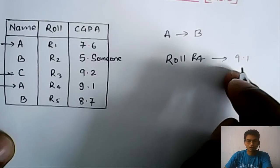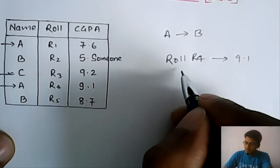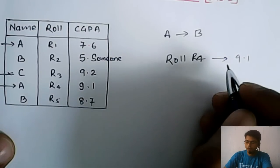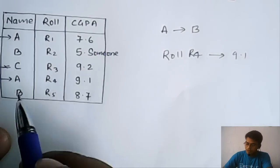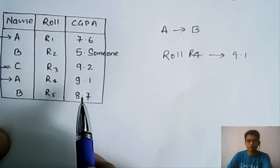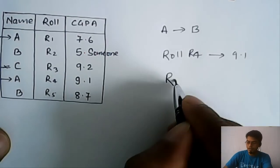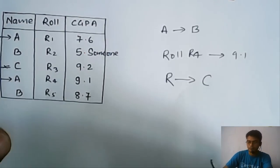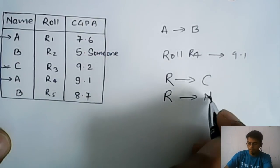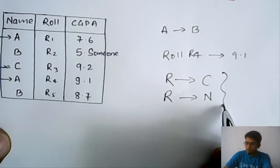Here we can say that the CGPA can be determined with the roll number. It means the roll numbers are uniquely associated with CGPAs, and we can say that roll number can determine CGPA. Similarly, roll number can also determine name.